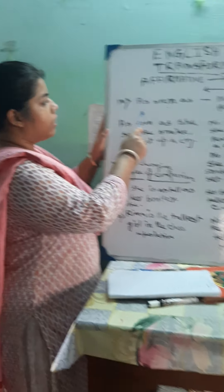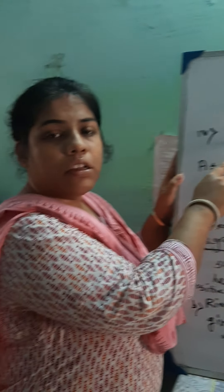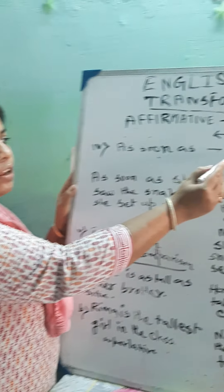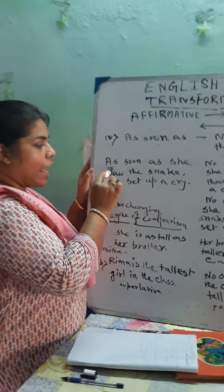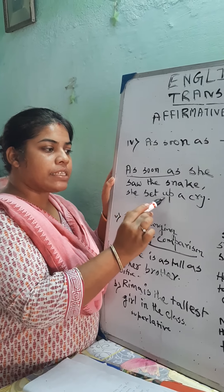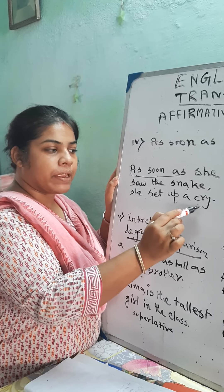See here — 'as soon as' and 'no sooner than.' If there is 'as soon as' in an affirmative sentence, you can change it to a negative by using 'no sooner than.' Here is a sentence: 'As soon as she saw the snake, she set up a cry.'